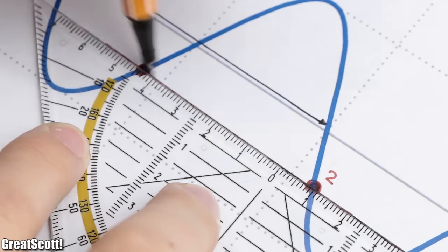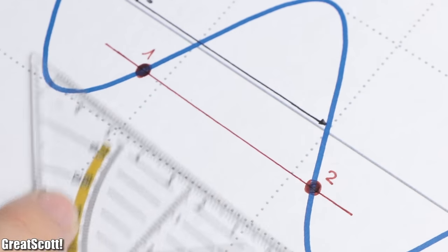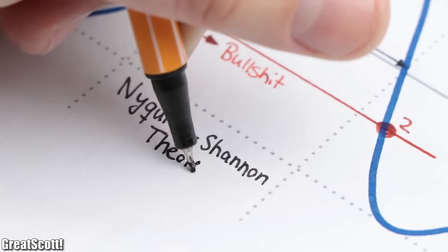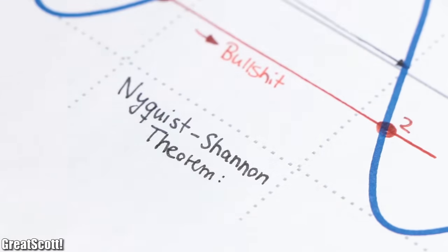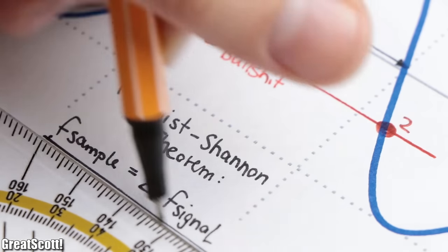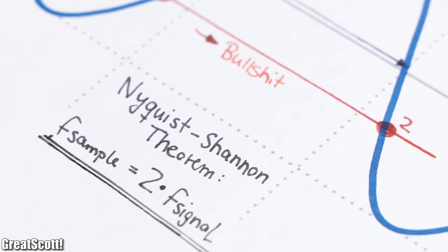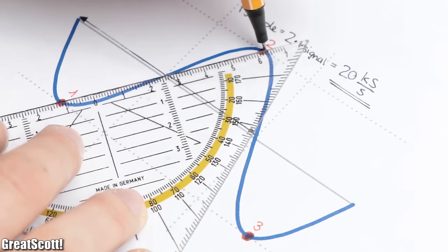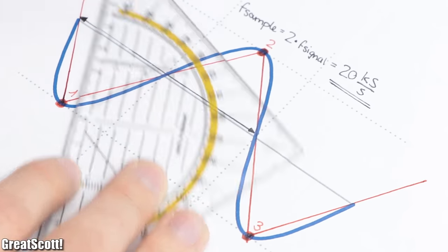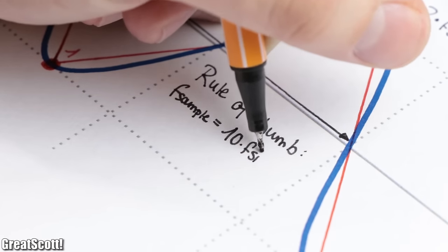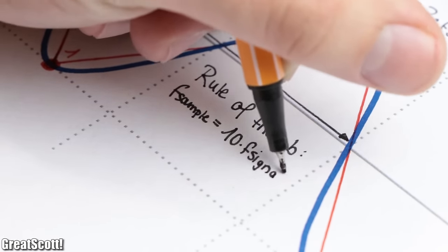If you want to recreate the function using those sampling points, we get complete bullshit. A solution for that offers the Nyquist-Shannon theorem, which says that the sampling rate should be at least twice as high as the frequency of the signal. But even with this increased sample rate, the reconstructed signal would still look questionable in the best case. So a common rule of thumb is to use a sampling rate 10 times higher than the frequency of the signal.